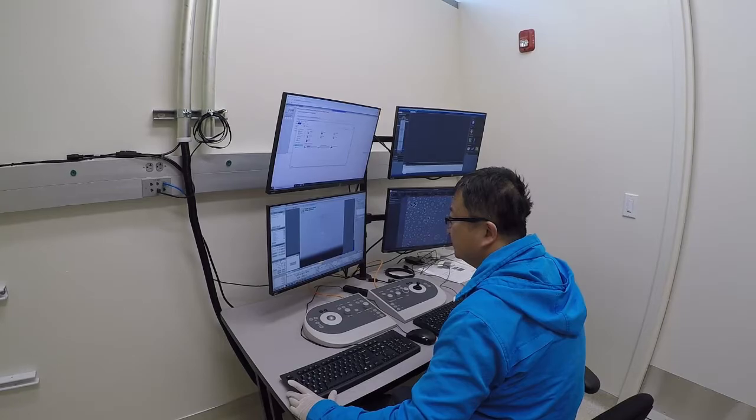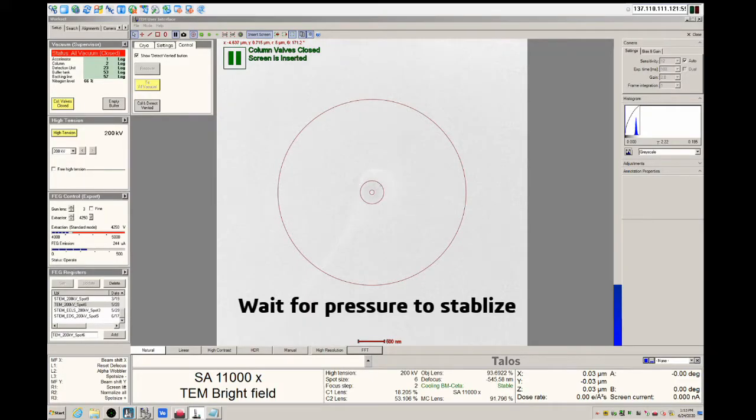The rest of this video will detail some of the basic alignments that you will be expected to perform. Once the column shows a pressure of less than 15 log, you may open the column valve to irradiate your sample with the beam.